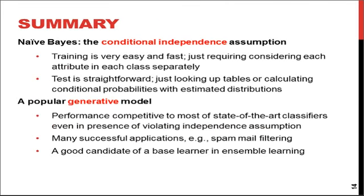To summarize, Naive Bayes is based on conditional independence — the independence of every attribute value. Training is very easy and fast, requiring only separate tables for each attribute value and each class. Testing is also straightforward: just look up the tables and calculate conditional probabilities with the estimated distributions. It is a very popular generative model because its performance is competitive with most state-of-the-art discriminative classifiers, even when the independence assumption is violated. Successful applications include spam mail filtering and image classification.